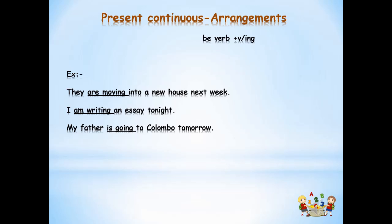We use present continuous tense to talk about arrangements for events at a time later than now. We use the structure be verb plus the present participle. Let's look at an example: 'They are moving into a new house next week.' That means they have already planned everything to go to a new house, so they are moving into a new house next week.